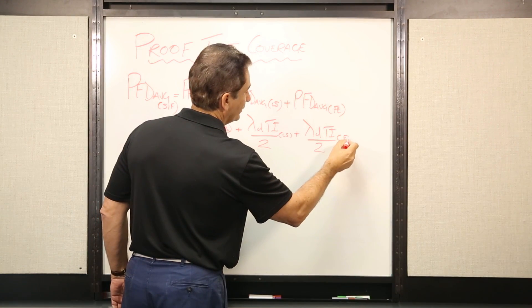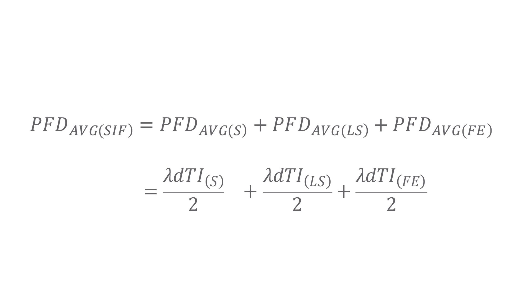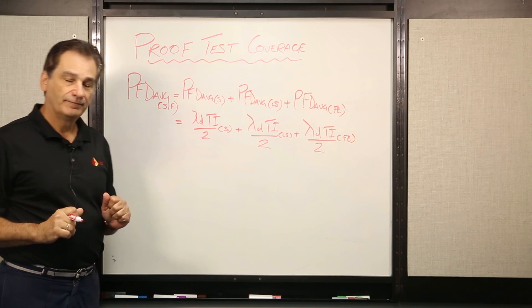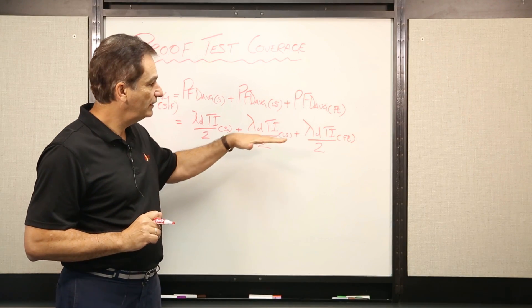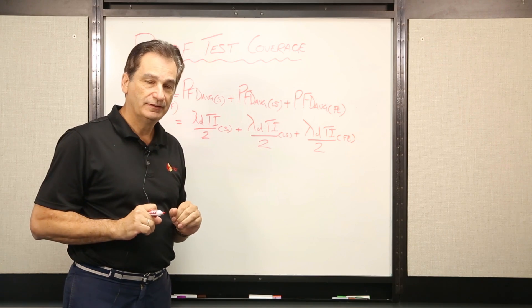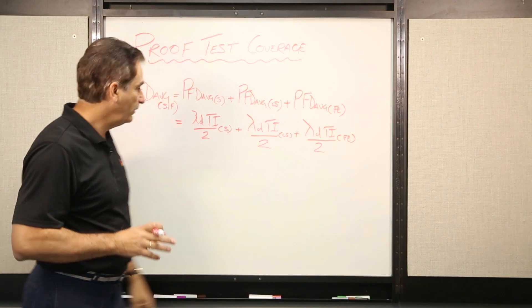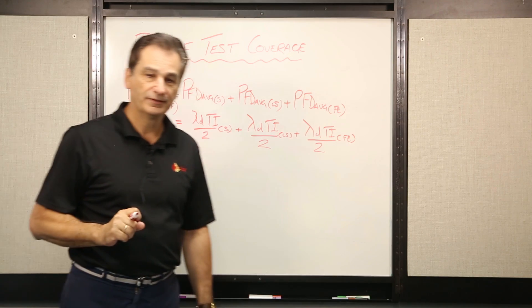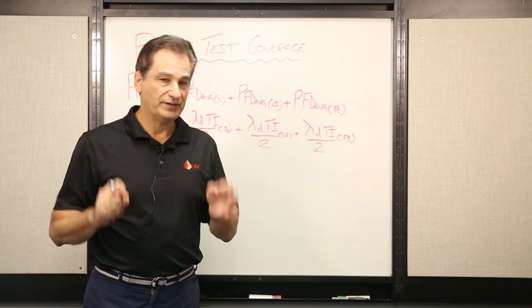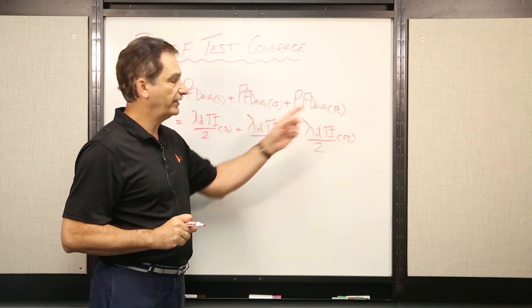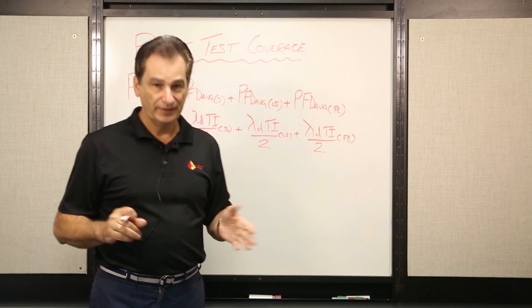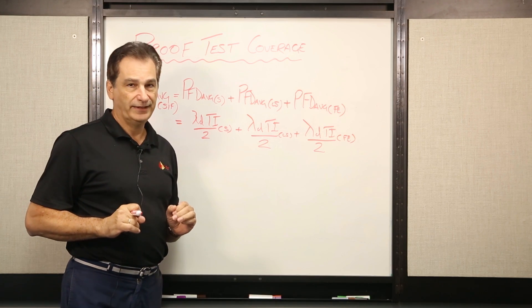And right now we're just, for simplicity, we're just looking at a single element system. No redundancy. The thing about this then is we're assuming that we have 100% fault coverage here, which means we can find all of our dangerous faults for each of these particular elements. Now here again, in reality, that's not possible. Certainly not for the final elements. Some of the logic solver manufacturers will say they can almost get 100%, some say 100%, but certainly when it comes to the final elements, you're not going to get anywhere near 100%.